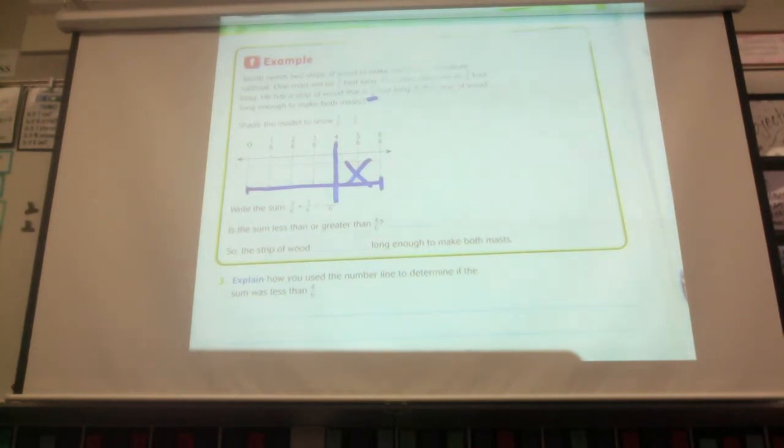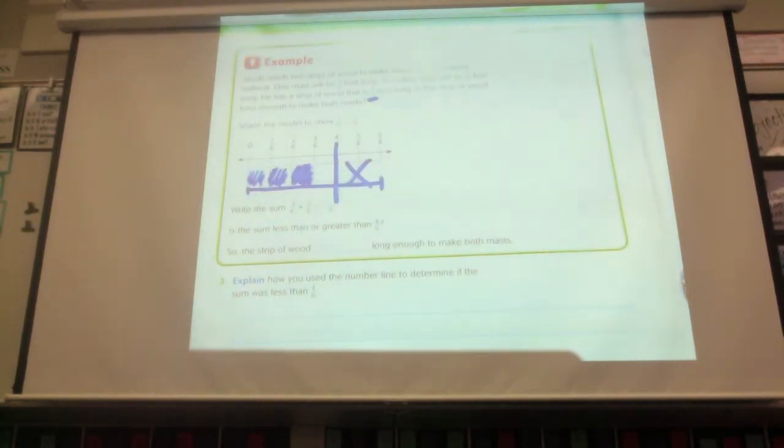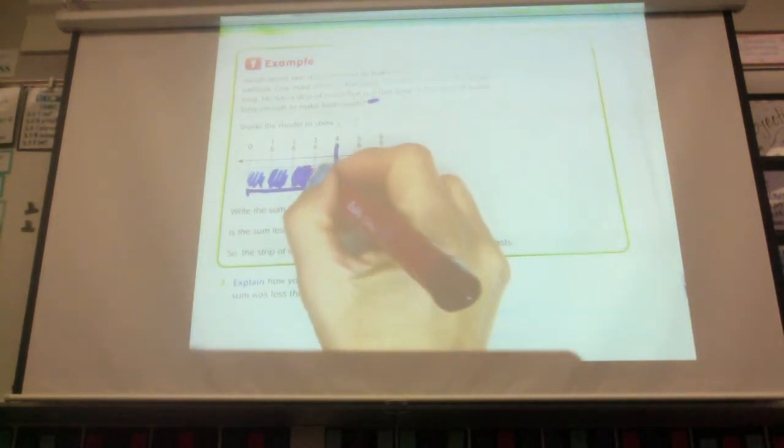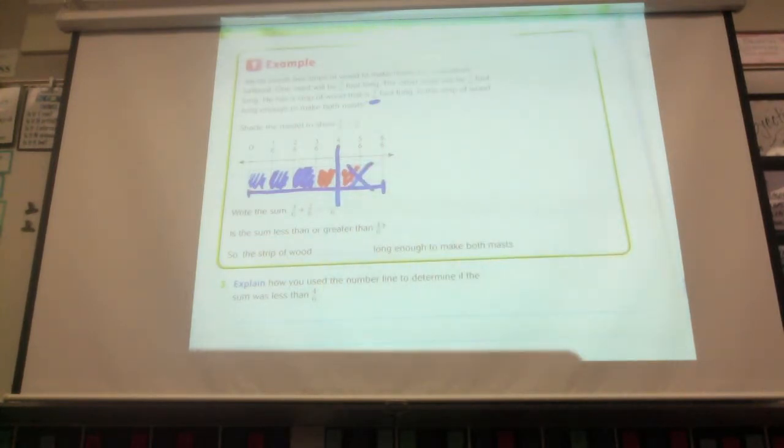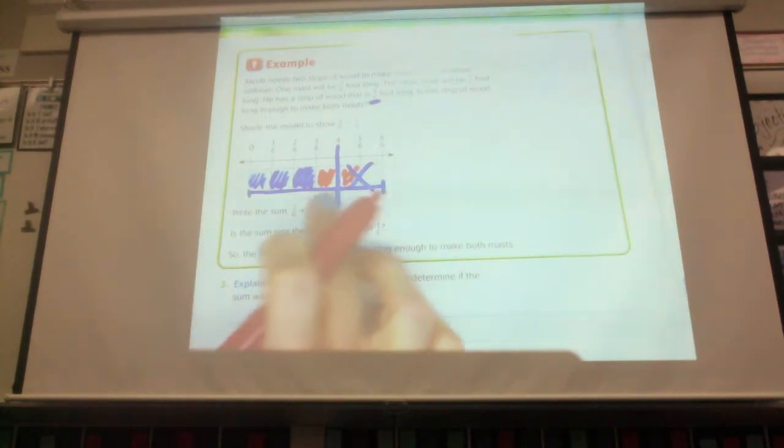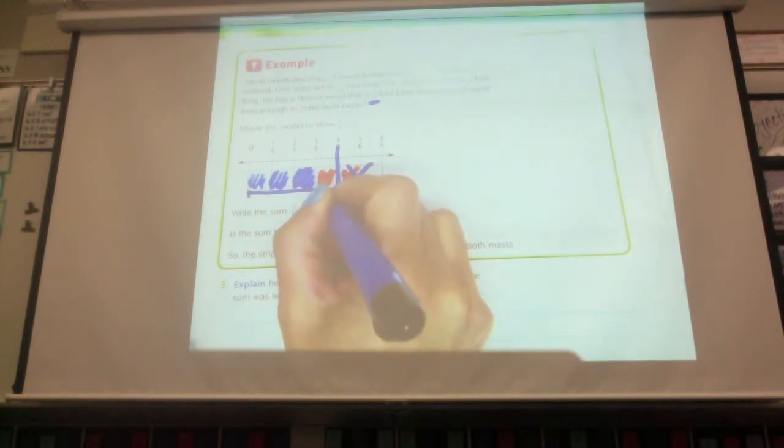So now we're going to start with his, he needs one that's three-sixths of a foot long. So I'm going to shade three. So far so good, right? The other one is how long? Can you tell already, is he going to make it? No, because we need one, two, and this one we already know doesn't even exist, because we didn't have that piece. So it says write the sum. If you do it just with numbers, without a model, you would have three-sixths plus two-sixths equals how many? Five-sixths.